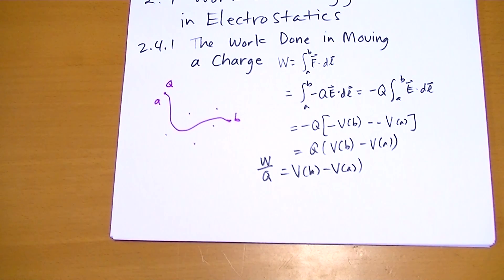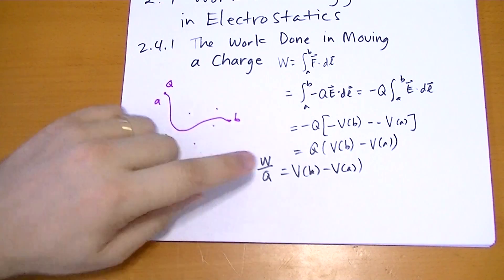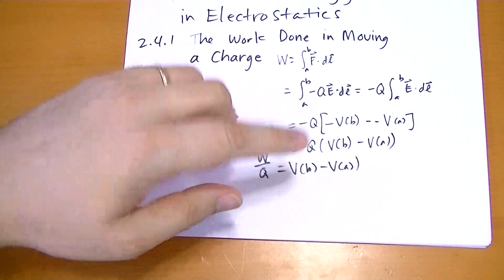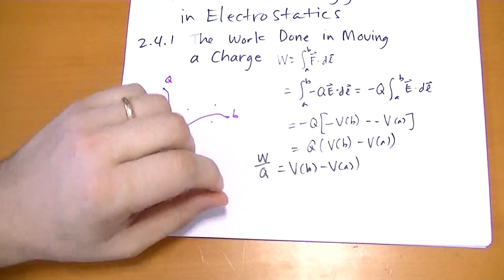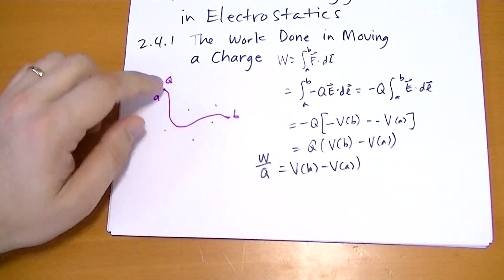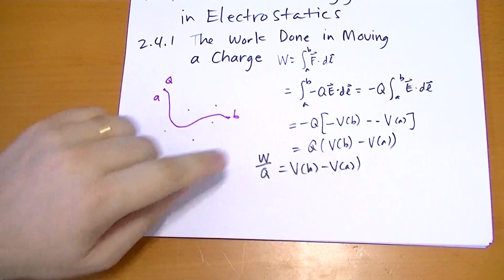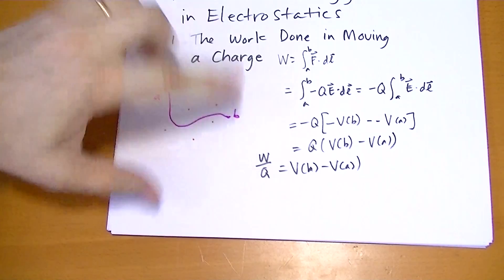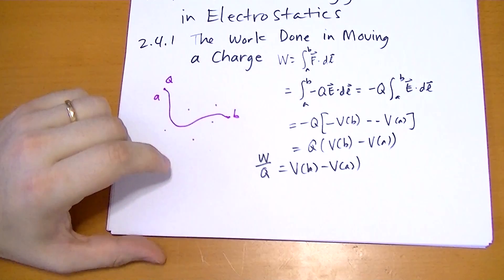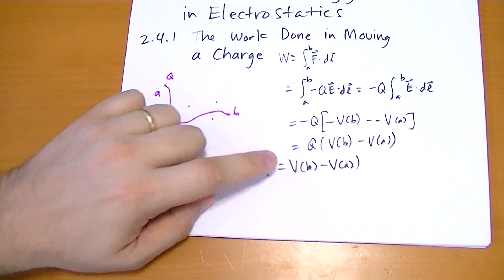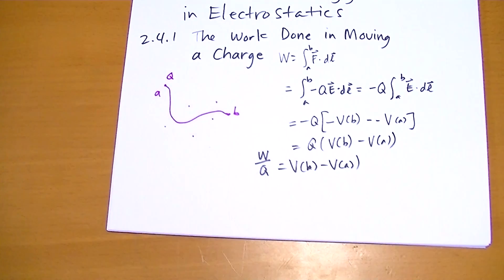This shows that the work it takes to move a charge through the field is just the charge times the potential difference between the two points. And of course the path is irrelevant — it doesn't matter what path you take — because the electric field doesn't have any curl to it. The potential is really just the work divided by that charge; that's all it really is.